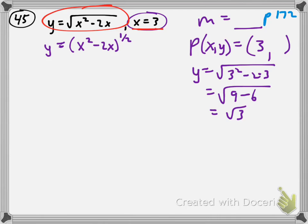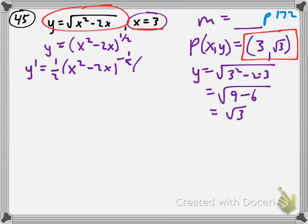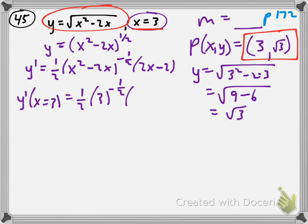As soon as students start trying to find the equation of the tangent line, they do all this work to find the slope and then don't know how to find the y — it's the same thing you did back in Algebra 1. The last piece of business is to figure out the slope m, which is the derivative evaluated at x equals 3. The derivative is 1/2 times (x squared minus 2x) to the negative 1/2, multiplied by (2x minus 2).